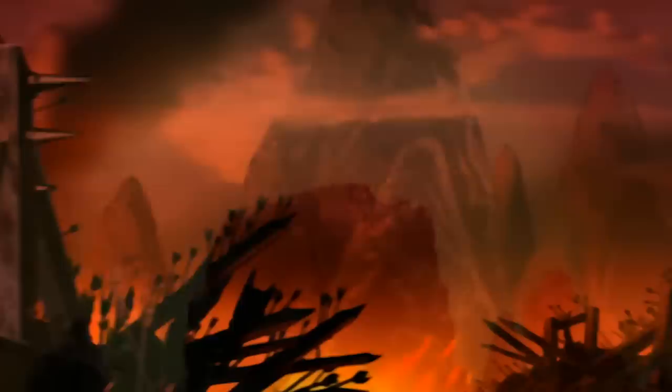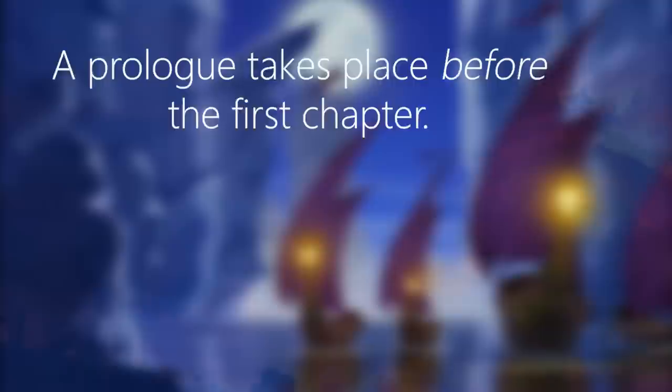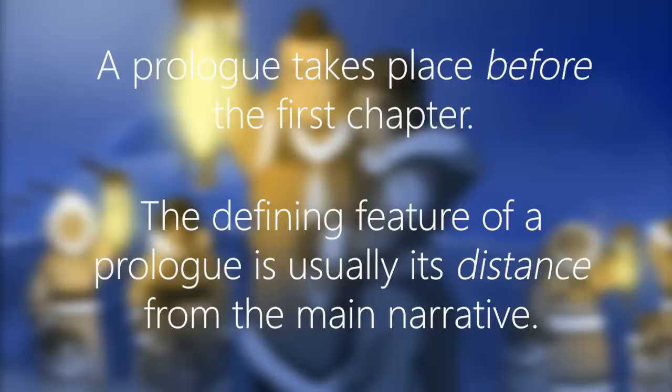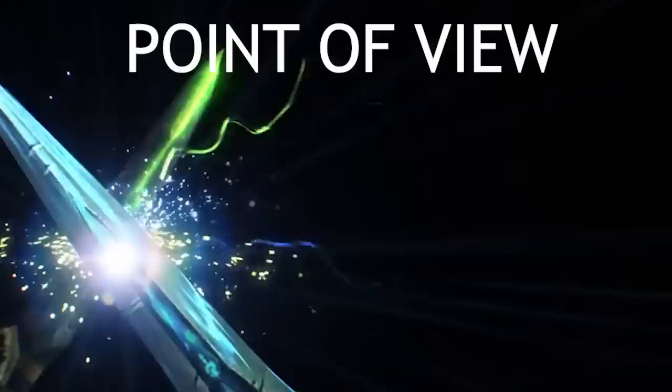A prologue is a segment of the story that takes place before the first chapter, and the defining feature of a prologue is usually its distance from the main narrative. This might be because of: A) point of view — it's told from the perspective of a different character, like in The Way of Kings by Brandon Sanderson; B) time — it takes place significantly after or before the main narrative, like in Harry Potter and the Philosopher's Stone, which takes place 10 years prior; or C) geography — it takes place in a vastly different setting, like in Altered Carbon.